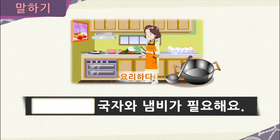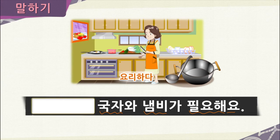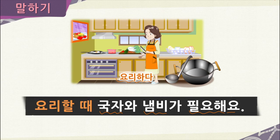In this sentence, we have 국자 (ladle) and 냄비 (pot), with the verb 필요해요. When does Mrs. Kim need these items? Right — when she cooks, or in Korean, 요리하다. So: 요리할 때 국자와 냄비가 필요해요 — when she cooks, she needs a ladle and a pot.